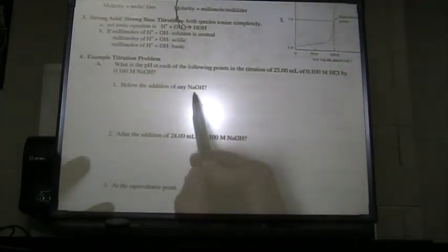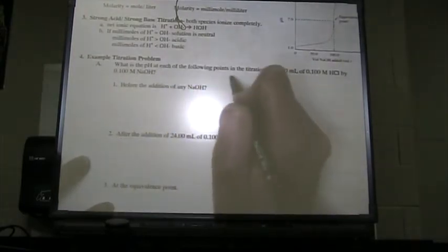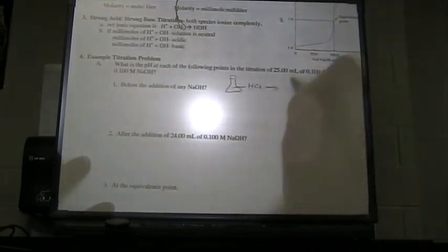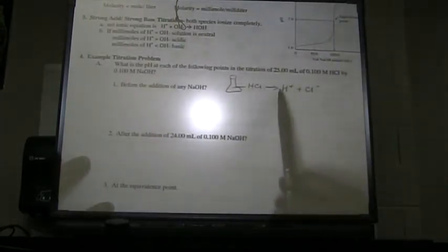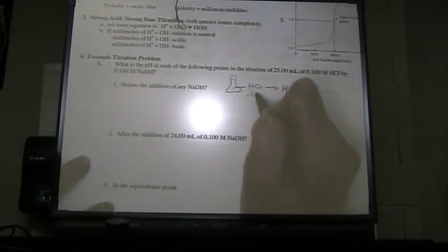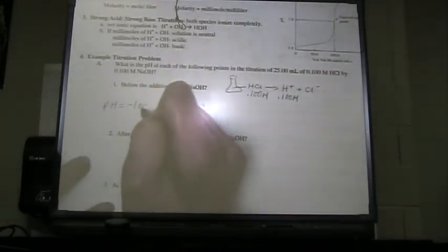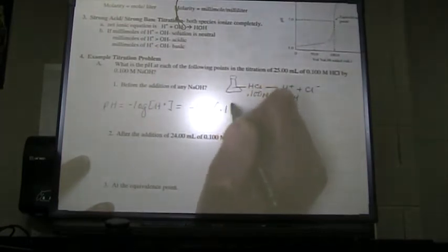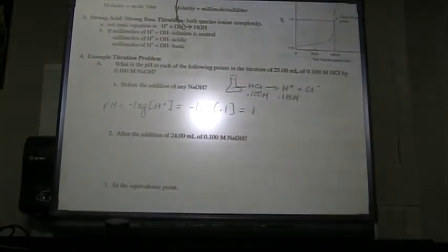Before the addition of NaOH, all you have in your Erlenmeyer is HCl. The HCl will totally dissociate into the hydrogen ion and the chloride ion. The only thing we're interested in here is anything that can affect the pH, and that would be the hydrogen ion. If you have 0.100 molar here, you also have 0.100 molar there. So the pH before anything happens is equal to the negative log of the hydrogen ion concentration, which is equal to the negative log of 0.1, which is equal to 1. That's a pretty strong acid, beastly acid.